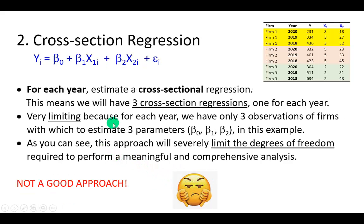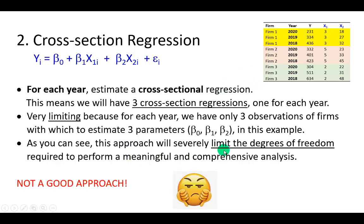You might also consider a cross-section regression, where for each year you estimate a cross-section regression for all the firms. For the year 2020, for example, you pull data for firms 1, 2, and 3 and regress it, doing the same for each year. But this approach will severely limit the degrees of freedom required to perform a meaningful and comprehensive analysis. Not a good approach — two thumbs down.